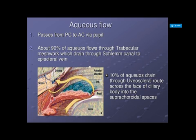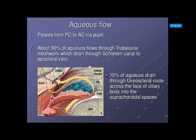The outflow of aqueous occurs through two pathways. First, 90% of aqueous flows through the trabecular meshwork, which drains through Schlemm's canal into episcleral veins. Second, 10% of aqueous is drained via the uveoscleral route, across the face of the ciliary body into the suprachoroidal spaces.